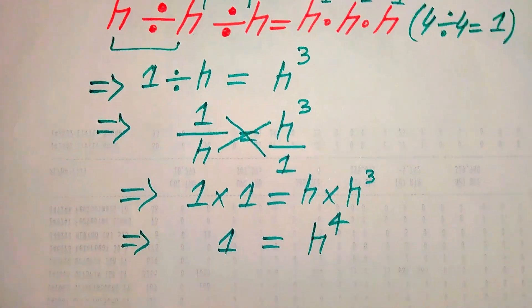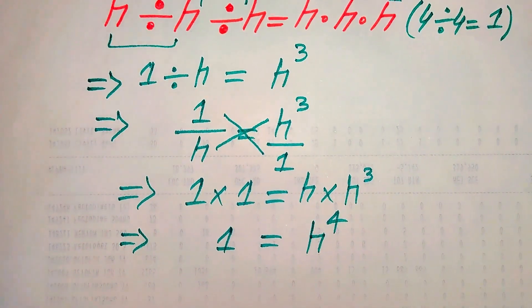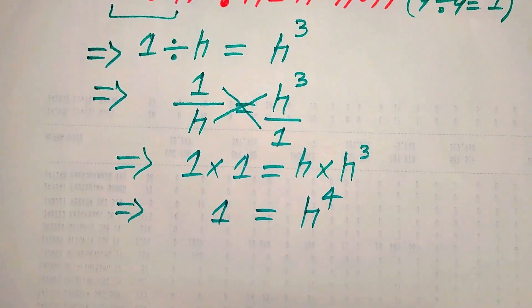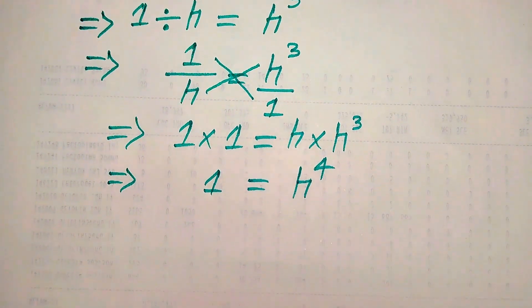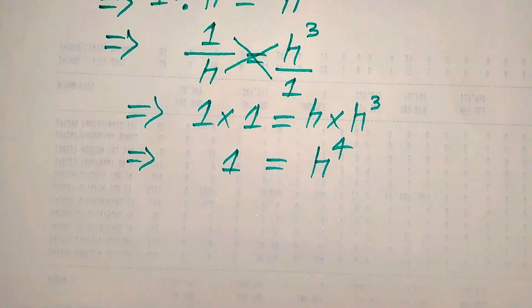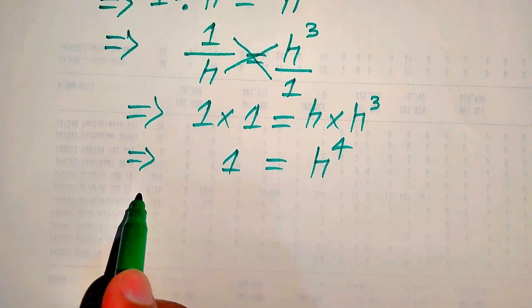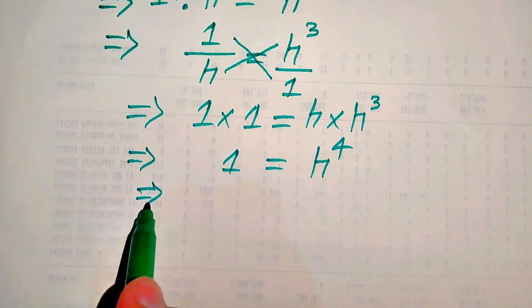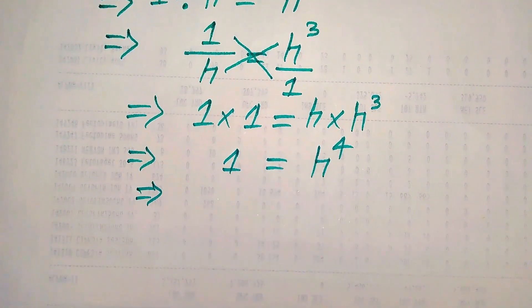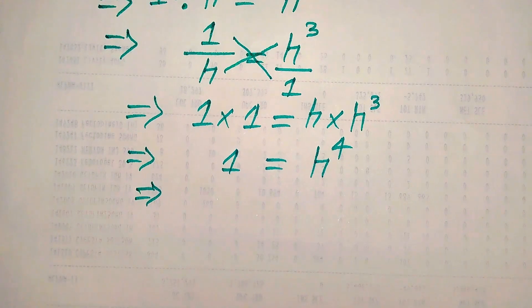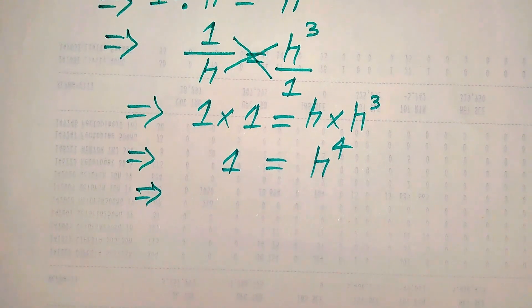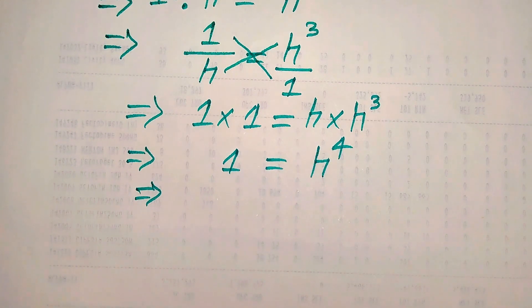This is a fourth order equation, which means it has 4 roots. In the next steps we need to find all four roots of this equation.